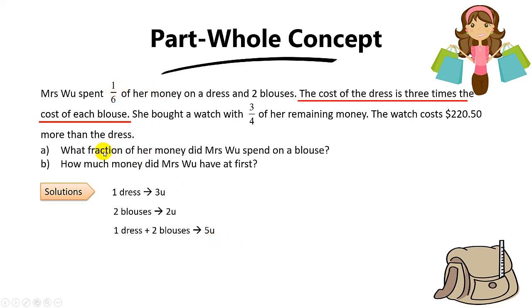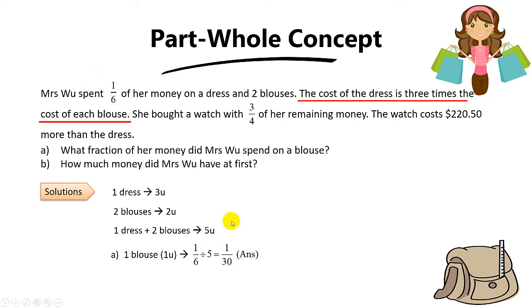The question asks what fraction of her money she spent on 1 blouse. We know 1 blouse is 1 unit. To find 1 unit, you take 1 out of 6 divided by 5. To do division, you flip the 5 over. Because 1 out of 6 represents 5 units, to find 1 unit you take 1/6 divided by 5, and the answer is 1 over 30. So each blouse costs 1/30 of Mrs Wu's money.